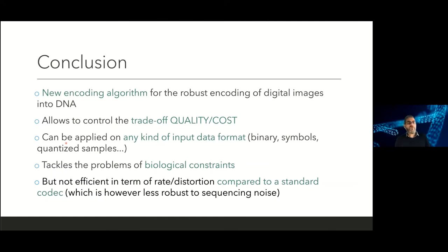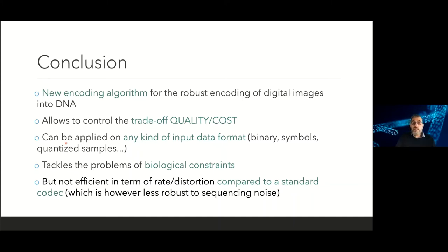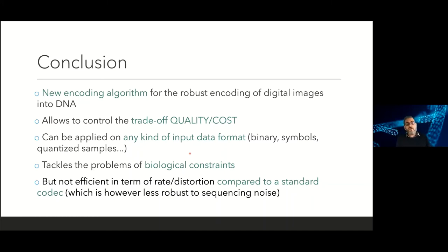To conclude: we introduced a new encoding solution for the robust encoding of digital images into DNA. This solution allows controlling the quality-cost trade-off — the quality of the encoded image and the length of DNA strands generated. It can be applied to any kind of input data format — binary or quantized symbols — not restricted to binary. It tackles biological constraints and is efficient in rate-distortion compared to standard codecs, and more robust to sequencing noise than standard codecs.